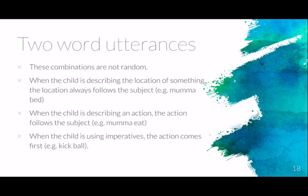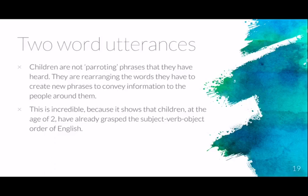The combinations are not random. When describing location, the location always follows the subject — 'mama bed' means mum is in bed. When describing an action, the action follows the subject — 'mama eat' — which mirrors adult grammar with subject-verb order. For imperatives, the action comes first — 'kick ball.' Children are not parroting phrases; they're rearranging words to convey information, showing they've already grasped important grammatical structures like subject-verb-object order.